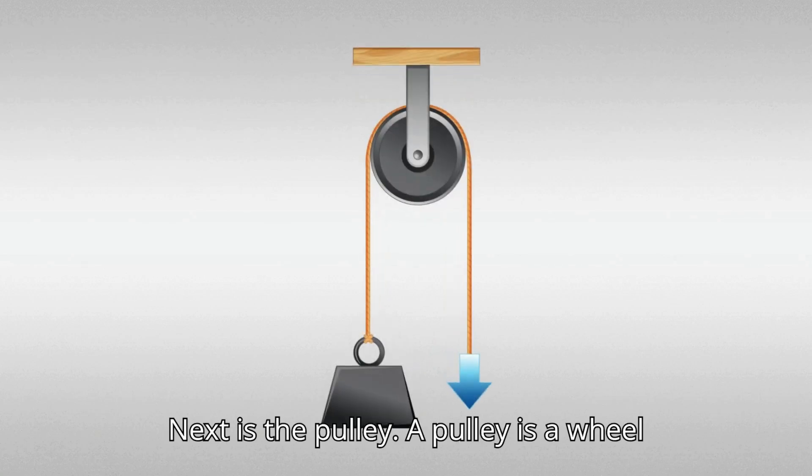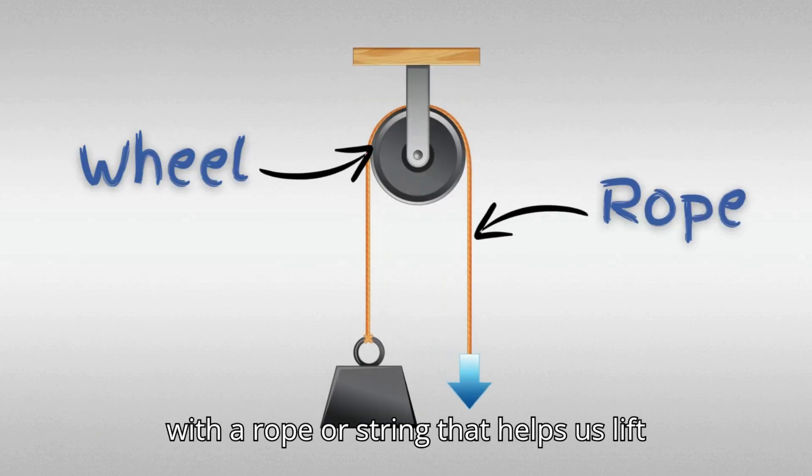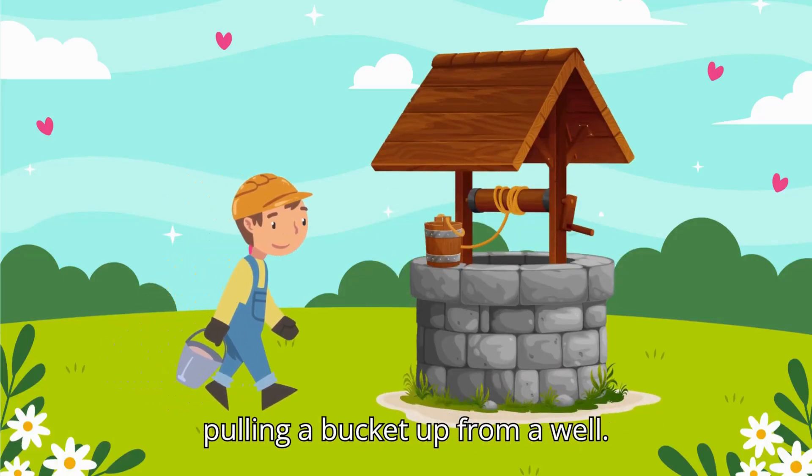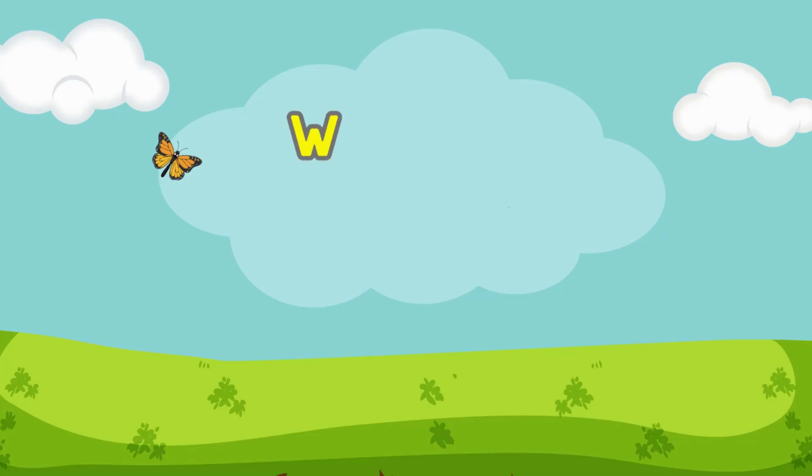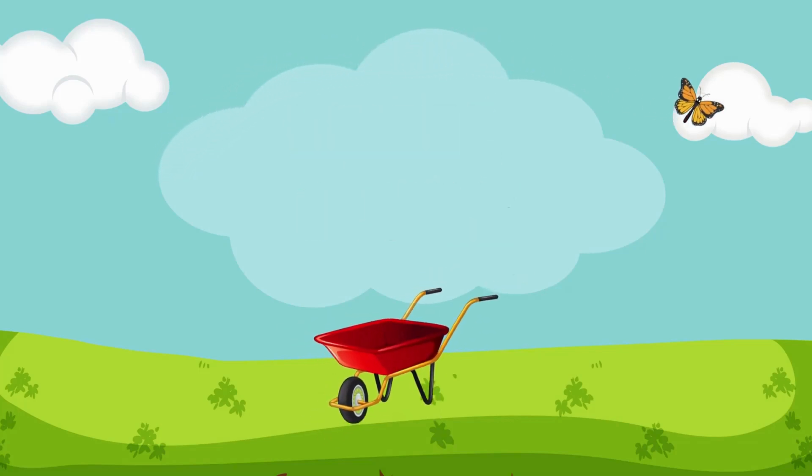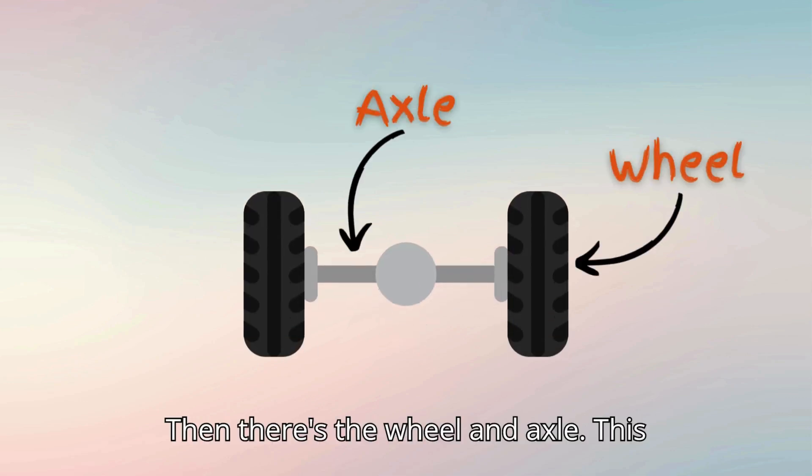Next is the pulley. A pulley is a wheel with a rope or string that helps us lift or move things up high. Imagine pulling a bucket up from a well.